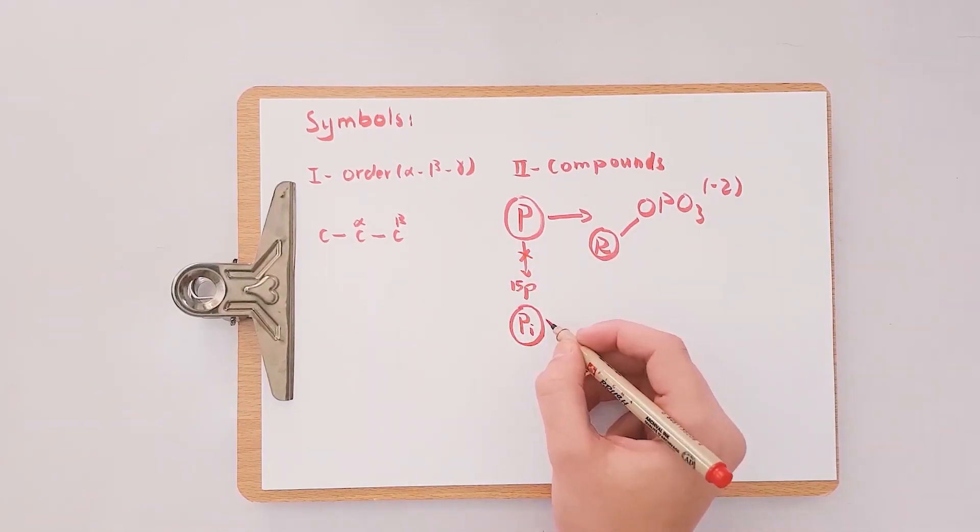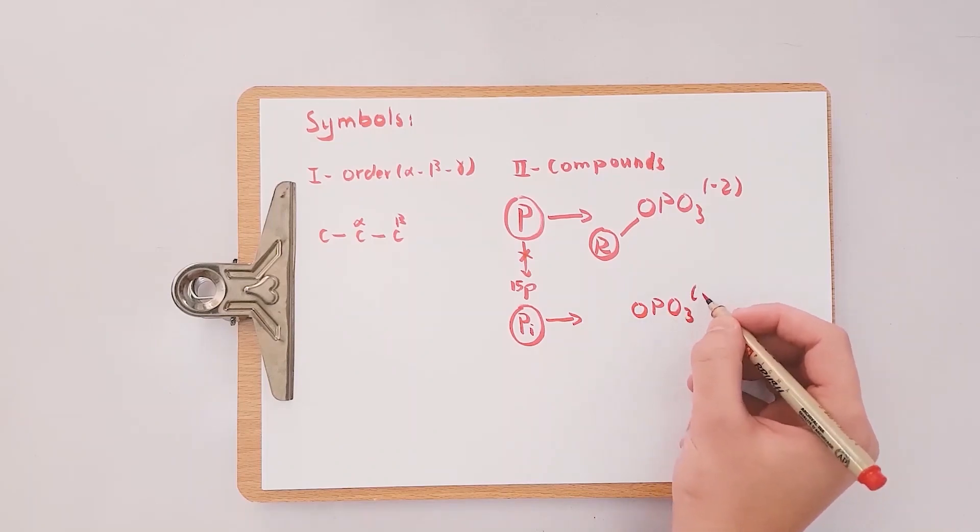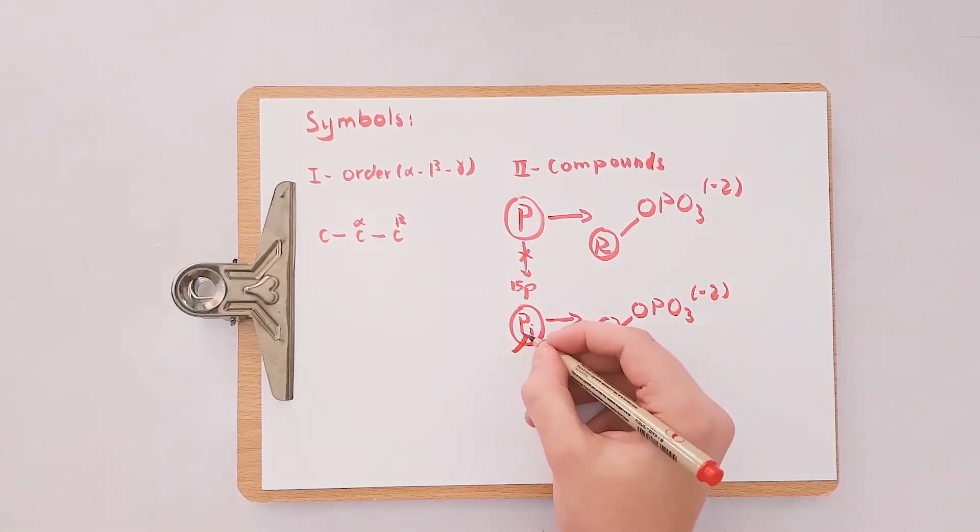And this P is mistakenly understood as the elemental phosphorus. No, it is not. And there is the Pi that is also used for the phosphate group, however it's bound only to a hydrogen atom instead of an organic molecule.